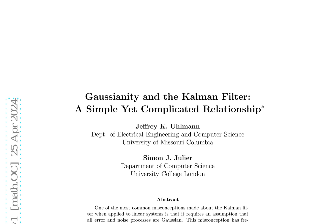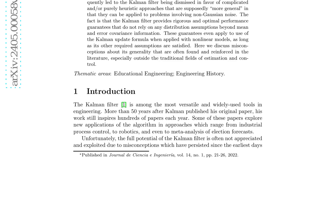The paper begins by summarizing the linear estimation and filtering problem, and how the same optimal solution has been derived from two different perspectives with different assumptions. It highlights that the Kalman filter can be applied rigorously and optimally to systems with errors from any probability distribution with finite first and second moments.